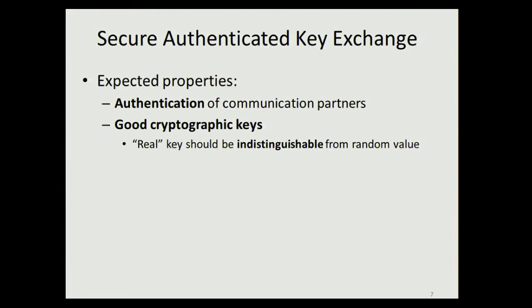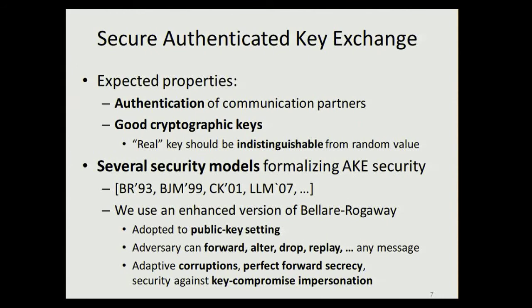Before we can talk about security of the protocol, we have to define what we mean by security. One natural choice for a security model for the TLS handshake is secure authenticated key exchange, or secure AKE for short. From a secure AKE protocol, we expect two properties: first, the protocol should authenticate both communication partners properly; and second, the protocol should provide a good cryptographic key — meaning the real key should be indistinguishable from an independent random value. The model we use is an enhanced version of the classical Bellare-Rogaway model, adopted to the public key setting with a strong adversary that can forward, alter, drop messages, corrupt parties adaptively, and which provides strong security guarantees like perfect forward secrecy and security against KCI attacks.